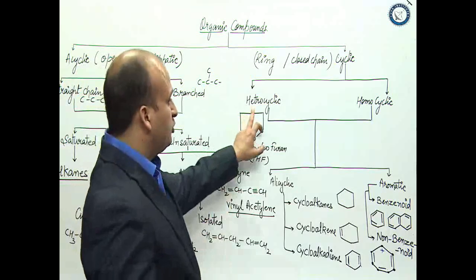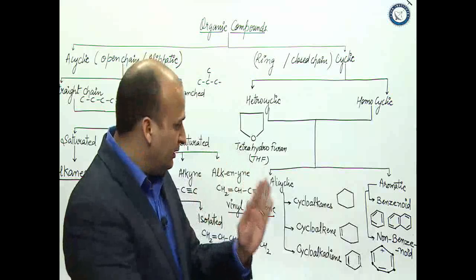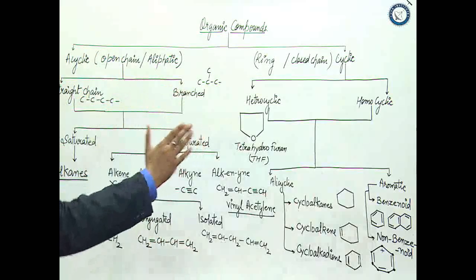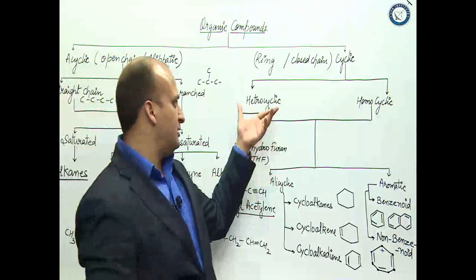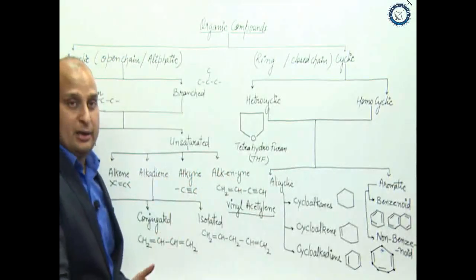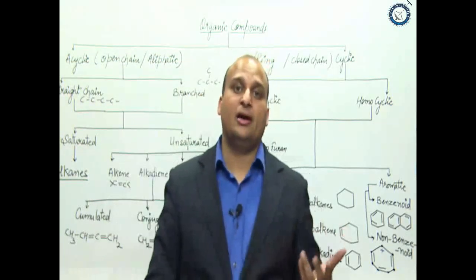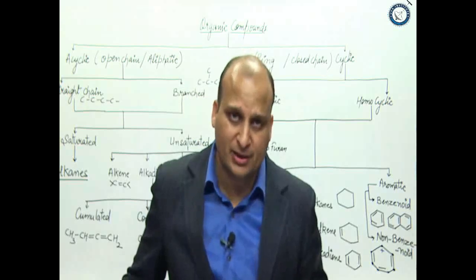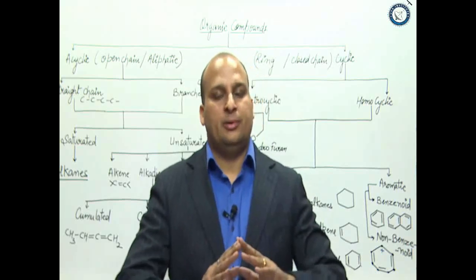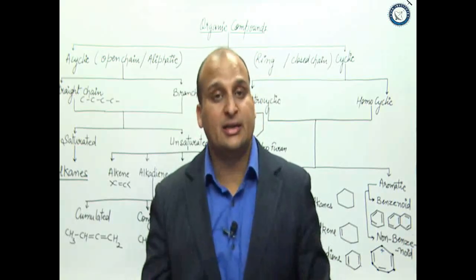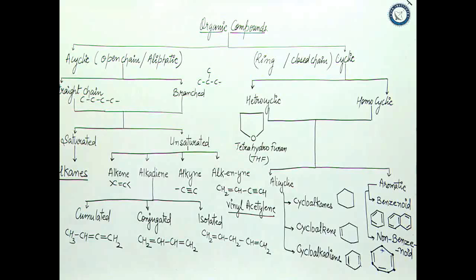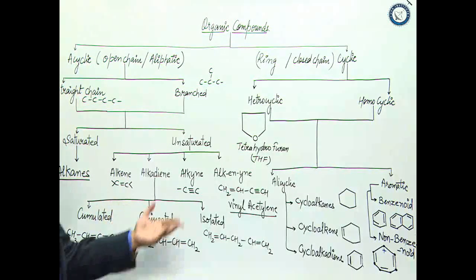I will tell you again - heterocyclic also has alicyclic and aromatic, but we have not considered it. We have only considered alicyclic and aromatic of homocyclic. So this is the complete classification of organic compounds. You can see there are many more differentiations, but if you remember this complete classification, it is more than sufficient for you people. I hope you have understood all this part.